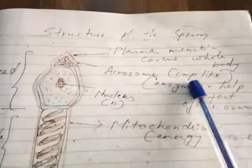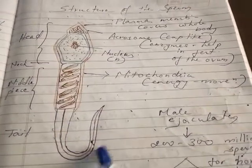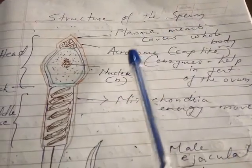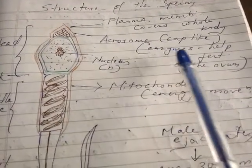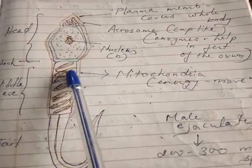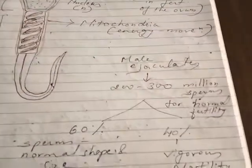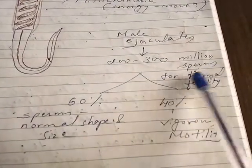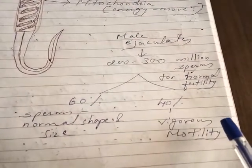Now, the structure of the sperm. The sperm has three parts: head, neck, middle piece, and tail. The whole sperm is covered by a plasma membrane. At the tip of the head is a cap-like structure called the acrosome, which releases enzymes that help in fertilization of the ovum. Inside the head is the nucleus. Inside the middle piece are mitochondria, which release energy important for the motility of the sperm. The male ejaculates 200 to 300 million sperms; for normal fertility, 60% of the sperms should have normal shape and size, while 40% should have vigorous motility.